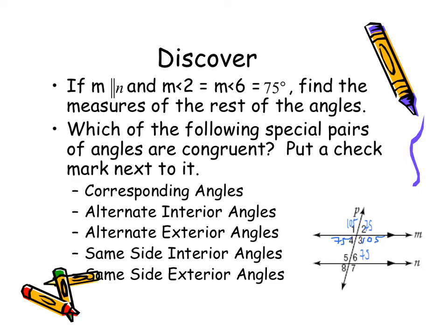We can do the same thing on the other set of angles. We're asked to put a check mark next to any that are congruent. Looking at corresponding angles first: 1 and 5, 4 and 8, 3 and 7, 2 and 6 — those are all corresponding. And they are all congruent.